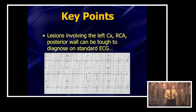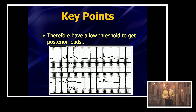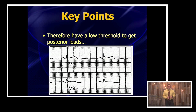They also talk about lesions involving the left circumflex, the RCA, and the posterior wall. These can be very difficult to diagnose because posterior MIs can hide from you. Studies have shown that posterior infarctions are probably the most commonly missed type of MI. What they say is have a low threshold to get posterior leads on these patients. When there's any ST depression in your anterior leads — especially V1, V2, V3 — get your posterior leads, and you might pick up an isolated posterior STEMI.